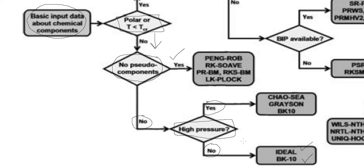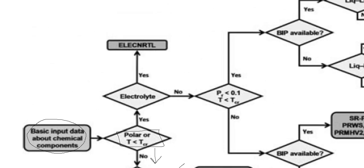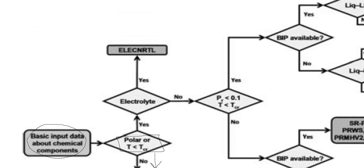So this is the scheme to adopt when dealing with a non-polar system: first check whether pseudo components are present or not. If pseudo components are not present, we go directly to Peng-Robinson/SRK. If pseudo components are present, we check whether it is a high pressure or low pressure system and select accordingly.